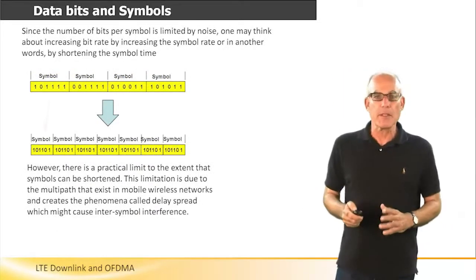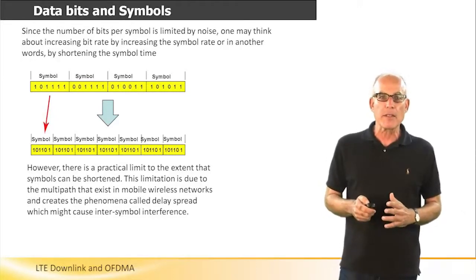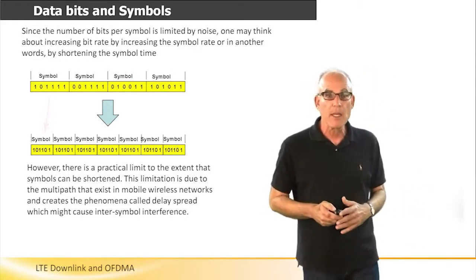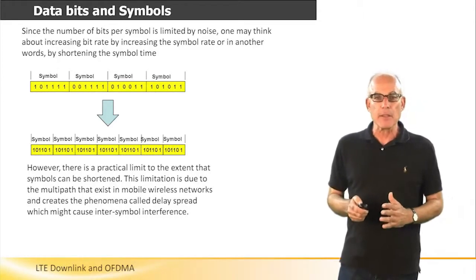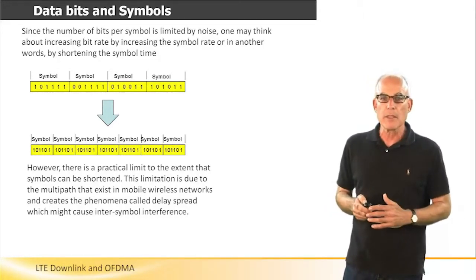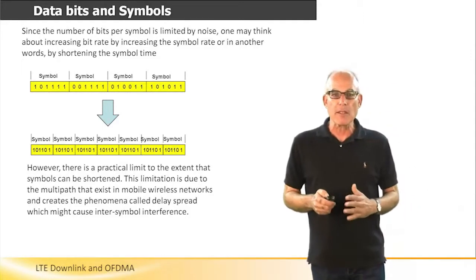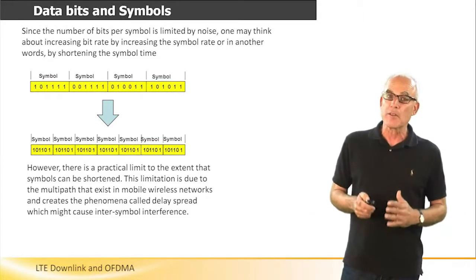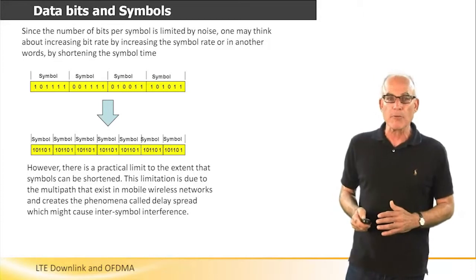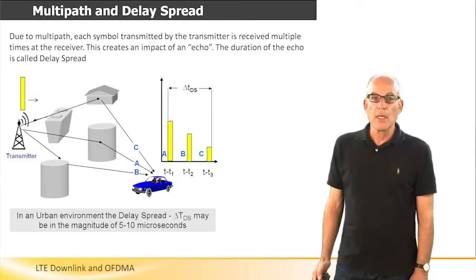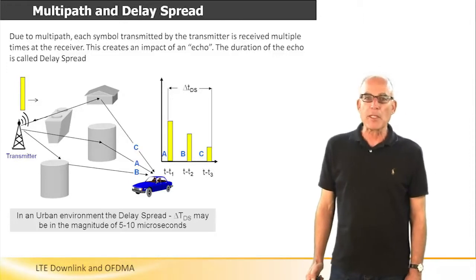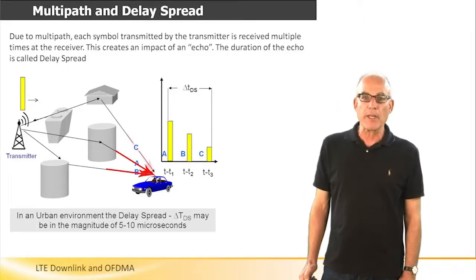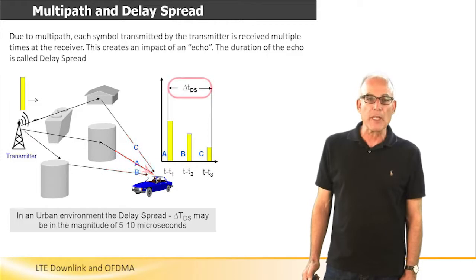Since the number of bits per symbol is limited by noise, one may think about increasing the bit rate by increasing the symbol rate, or in other words, by shortening the symbol time. However, there is a practical limit to the extent that symbols can be shortened. This limitation is due to the multipath that exists in mobile wireless networks, which creates a phenomena called delay spread, which in its turn may cause inter-symbol interference. Due to multipath, each symbol transmitted by the transmitter is received multiple times at the receiver, creating an impact of an echo. The duration of the echo is called delay spread.